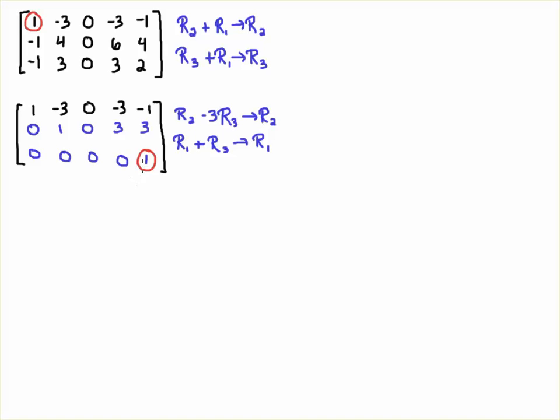So I'm going to pick this one to be my next pivot and I'm going to eliminate these two entries here by multiplying row 3 by minus 3 and adding it to row 2, then replacing row 2. And then I'm going to take row 3 and add it to row 1 and replace row 1.